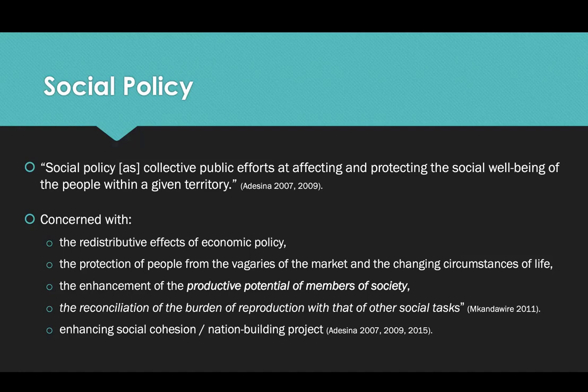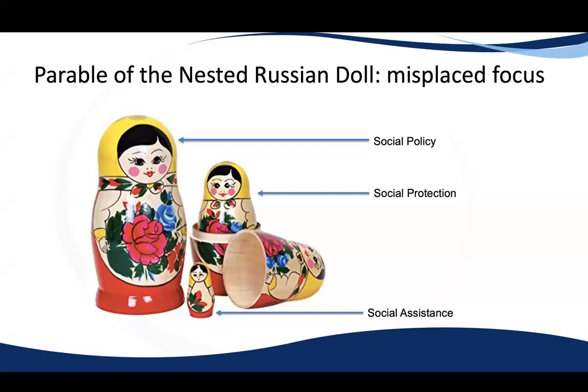Social policy is concerned with the redistributive effect of economic policy, the protection of people from the rigors of the market and changing circumstances of life, the enhancement of the productive potential and capacity of members of society, the reconciliation of the burden of reproduction, and enhancing social cohesion and nation-building. Using the nested Russian doll as an example, social assistance is a subset of social protection, and social protection is a subset of social policy.